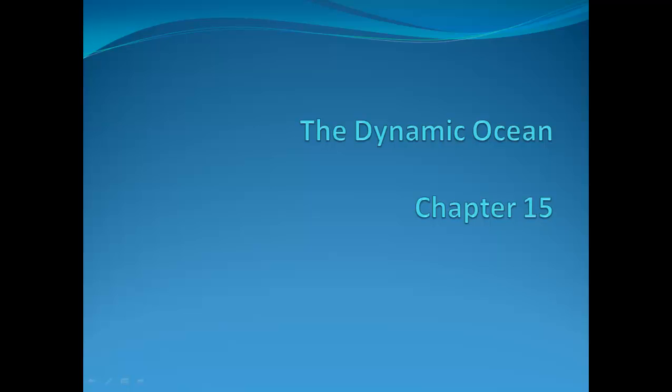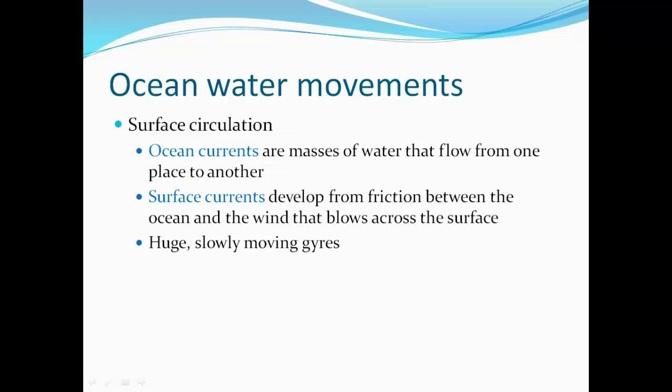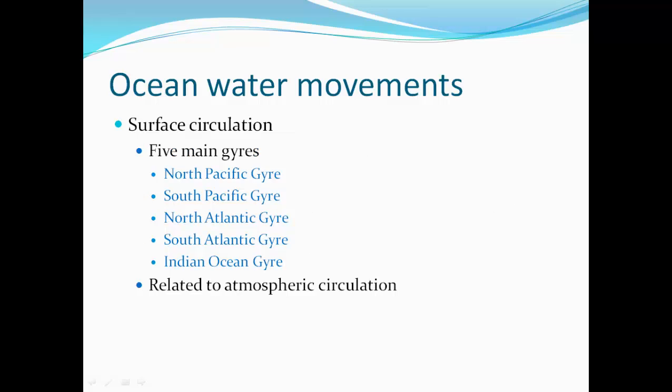Chapter 15, The Dynamic Ocean. Ocean water movements. Surface circulation — ocean currents are masses of water that flow from one place to another. Surface currents develop from friction between the ocean and the wind that blows across its surface. These form huge, slowly moving gyres.